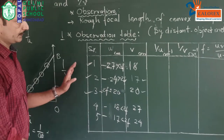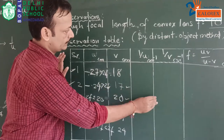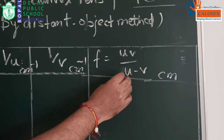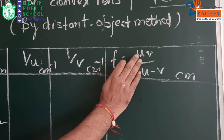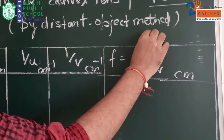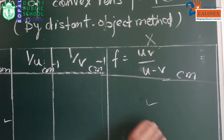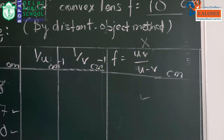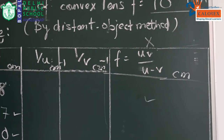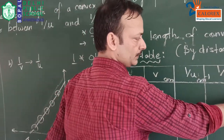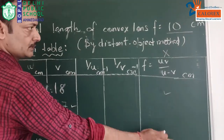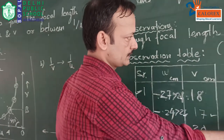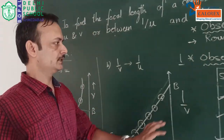After finishing the observation table you calculate 1/u and 1/v. This is rarely asked by examiners but if you have time you can calculate it. It is optional, so you can remove that column from your table if not required.